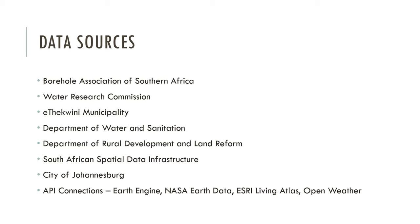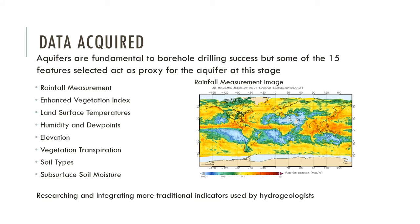We collected borehole data from local organizations including the Borehole Association, the WRC, local municipalities, and water and sanitation authorities. We merged that data with data from Google Earth Engine and the NASA Earth Data Portal, accessing global environmental and geological databases through those API connections. Key data sources acquired for building the model include rainfall, vegetation cover, land surface temperature, and soil types — about 15 different features in total, which act as a proxy to things like aquifers.